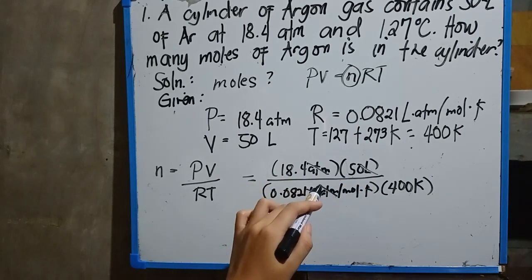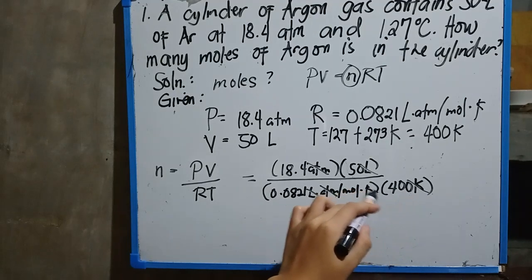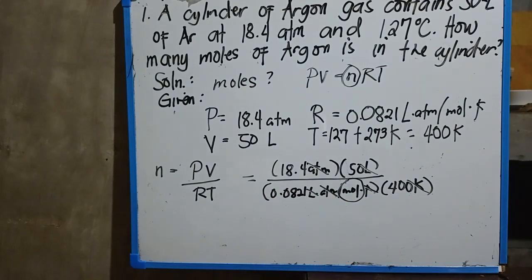What's left is our mole, so we can now solve for that. 18.4 multiplied to 50 liters is equivalent to 920. 0.0821 multiplied to 400 is equivalent to 32.84. So 920 divided by 32.84, our mole is...